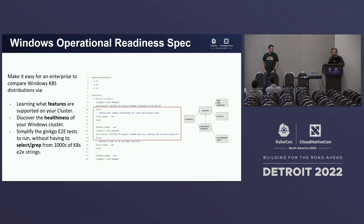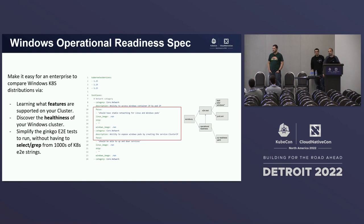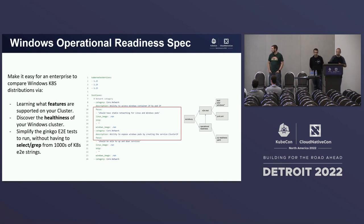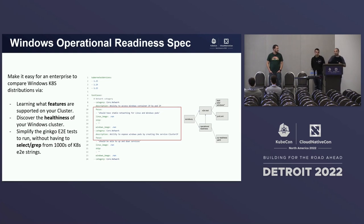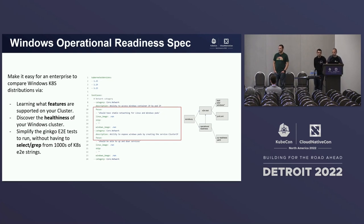We have been moving forward in the subprojects of SIG Windows as well. The first is Windows Operational Readiness, where we are developing an operational conformance test for Windows. It's easier now for enterprises to validate their Windows Kubernetes distribution. It works by having a specification that defines categories and tests your cluster needs to pass to be ready and operational. We had another presentation about this two hours ago with a deep dive. This is evolving, just starting, and we are looking for contributors.